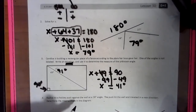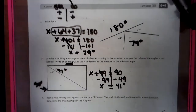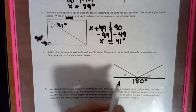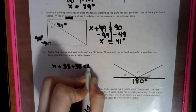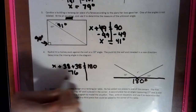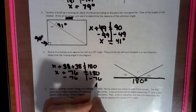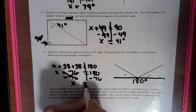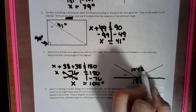Rashid hits a hockey puck against the wall at a 38 degree angle. The puck hits the wall and travels in a new direction. Determine the missing angle. We know about our straight line here — our straight line is 180 degrees. So we have x plus 38 plus 38 equals 180 degrees. We can add those two together to get 76. We see addition, we do subtraction. Whatever we do to one side, we do to the other just to keep it balanced. We are left with x, and if we take 76 away from 180, we end up with 104 degrees. So our missing piece is 104 degrees.